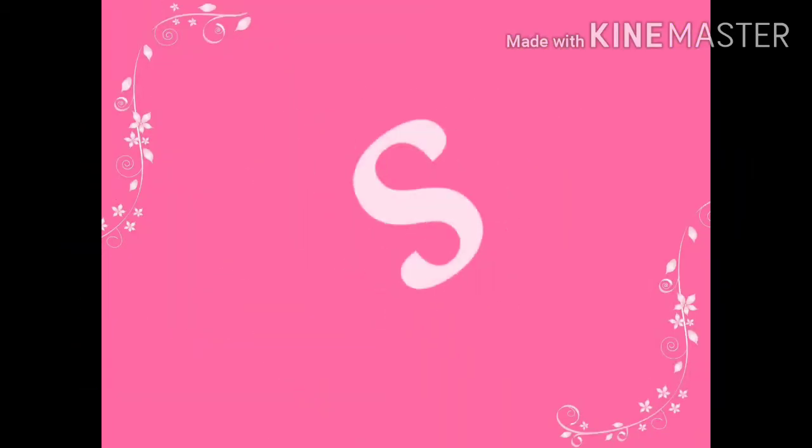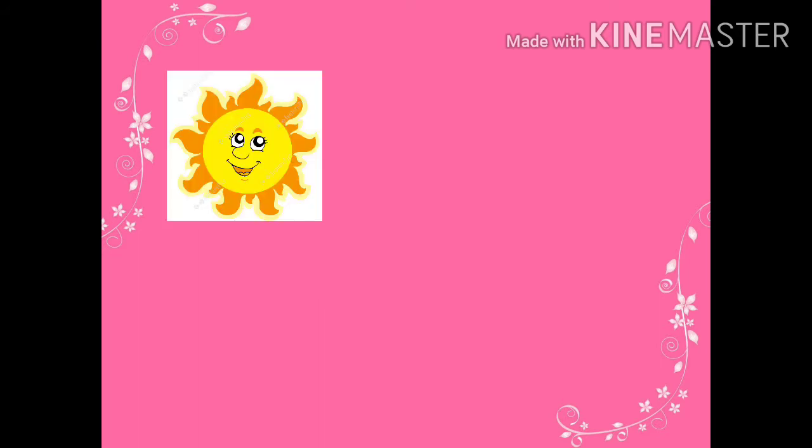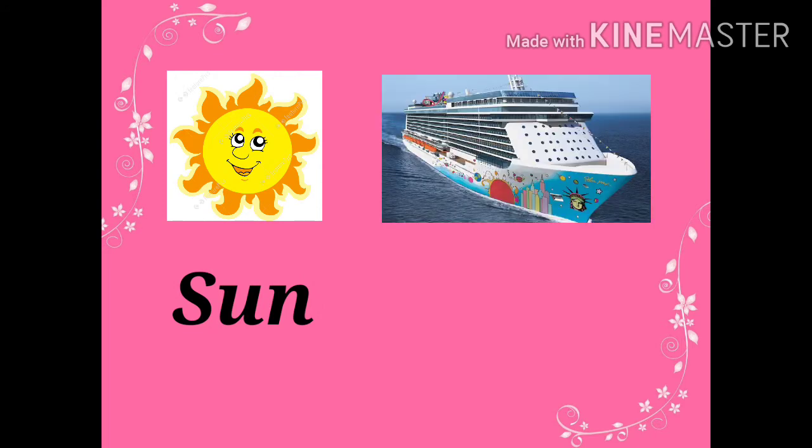Let's start. Three letter word from S is Sun. What is Sun? S-U-N, Sun. Next is Ship. S-H-I-P, Ship. Sun, Ship.